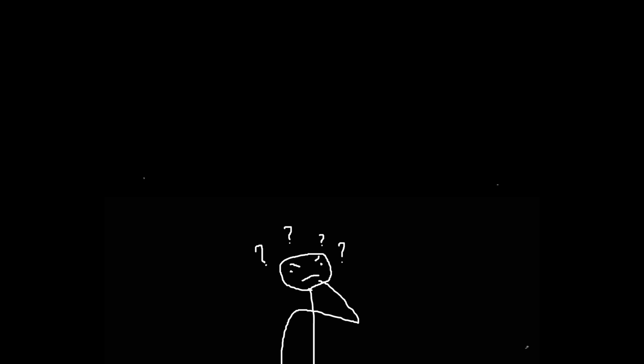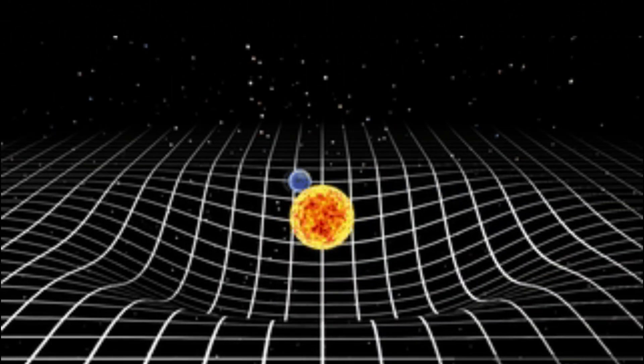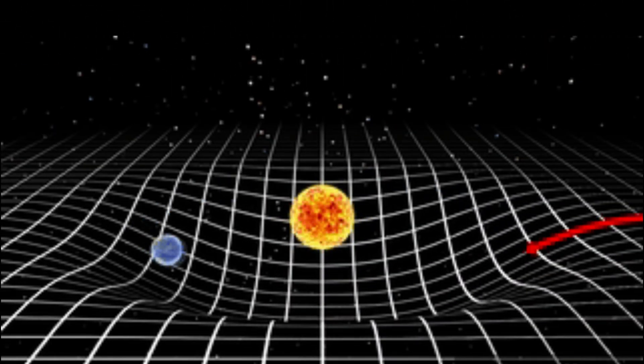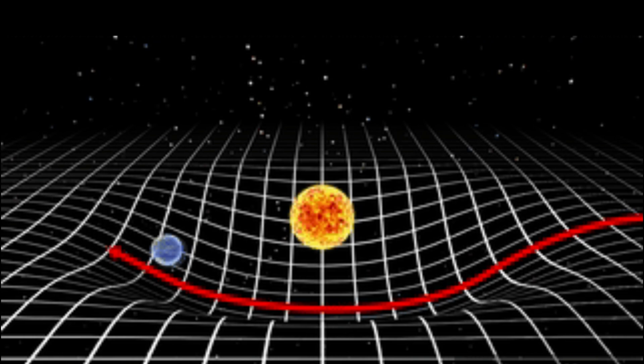The question, what existed before the Big Bang, is inherently flawed because, according to Einstein's theory of relativity, time and space are interconnected. Time itself was born with the Big Bang. So the concept of before is meaningless in this context since there was no time.